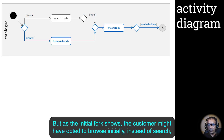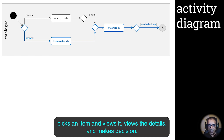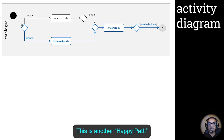As the initial fork shows, the customer might have opted to browse initially instead of search, picks an item, views the details, and makes a decision. This is another happy path.